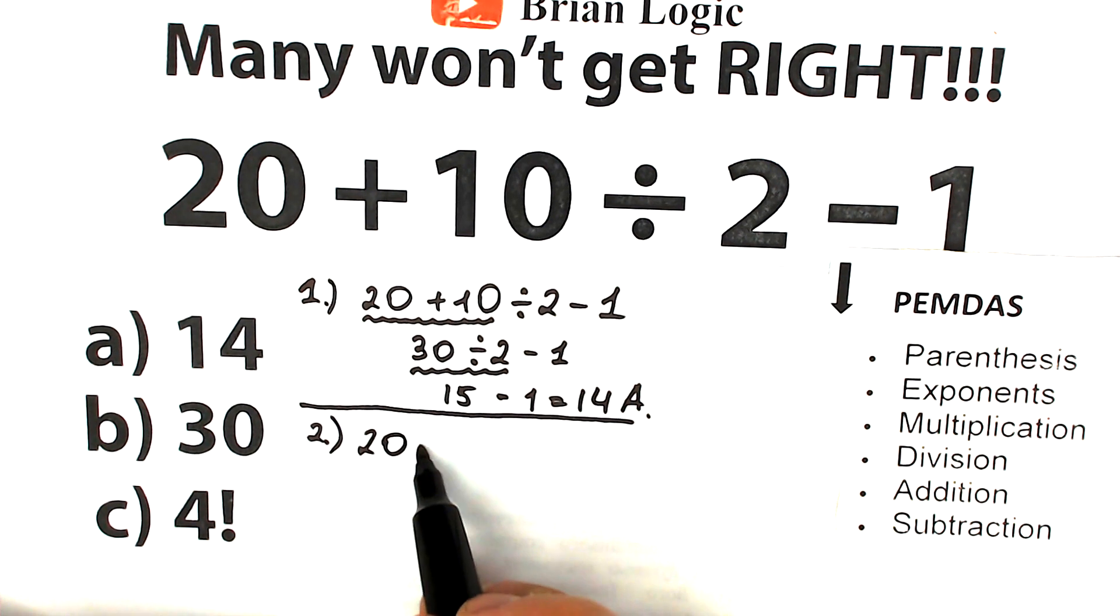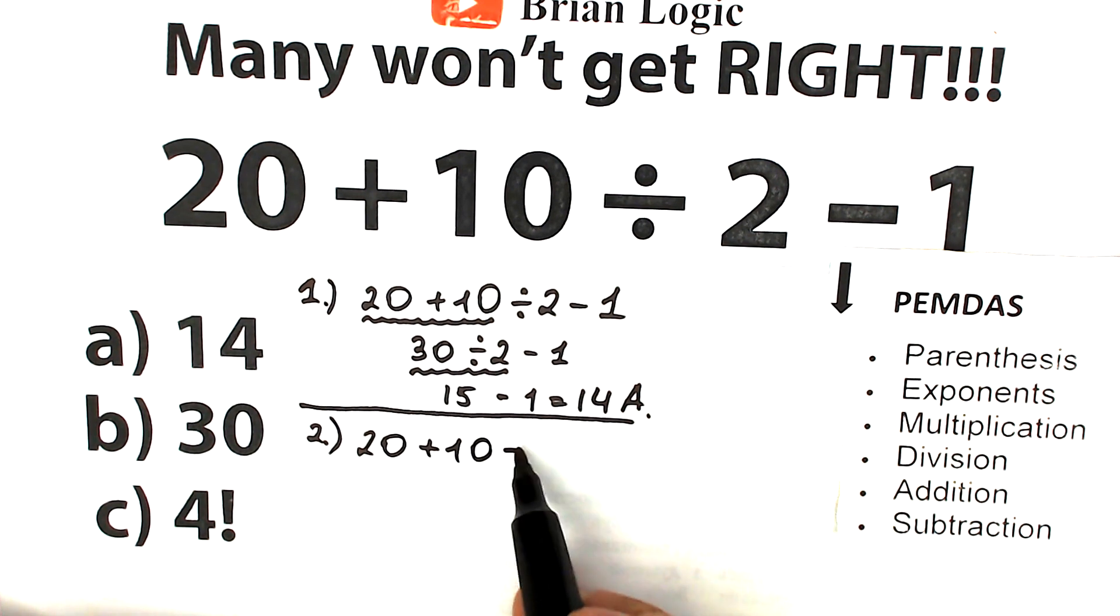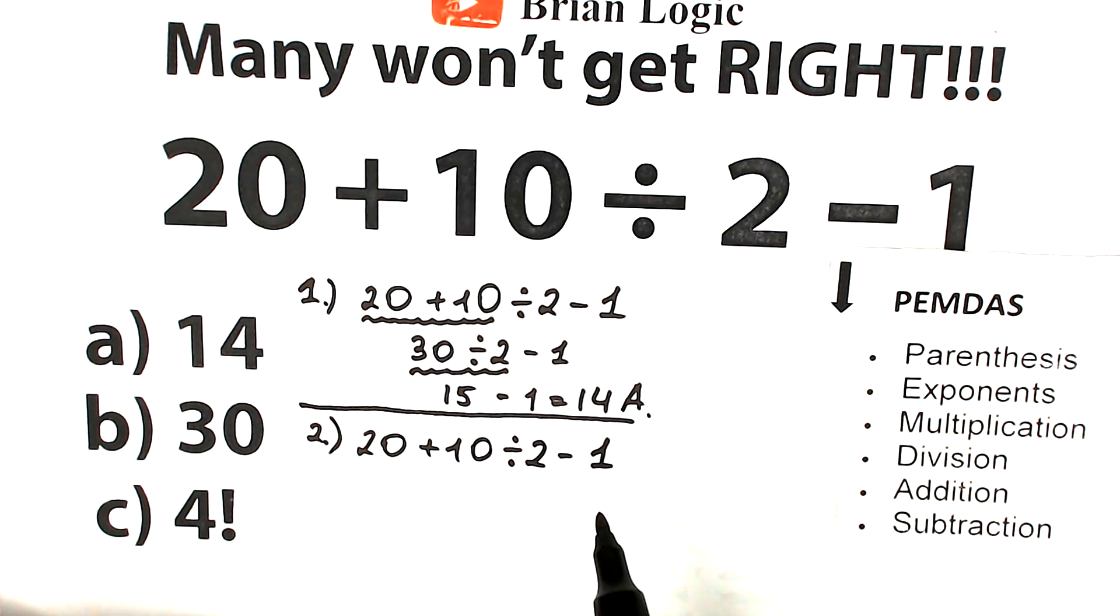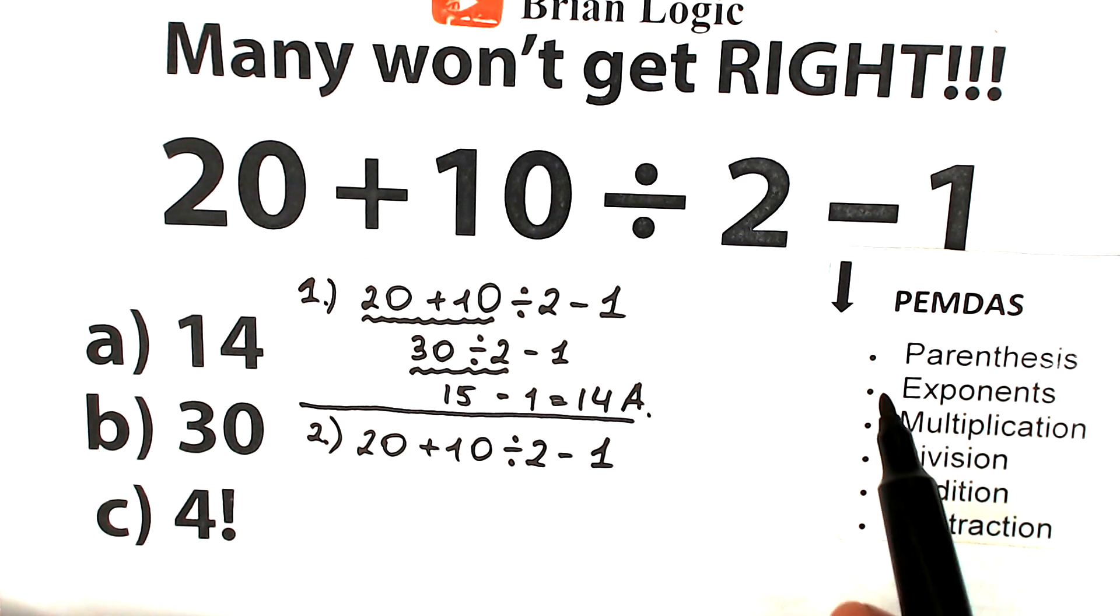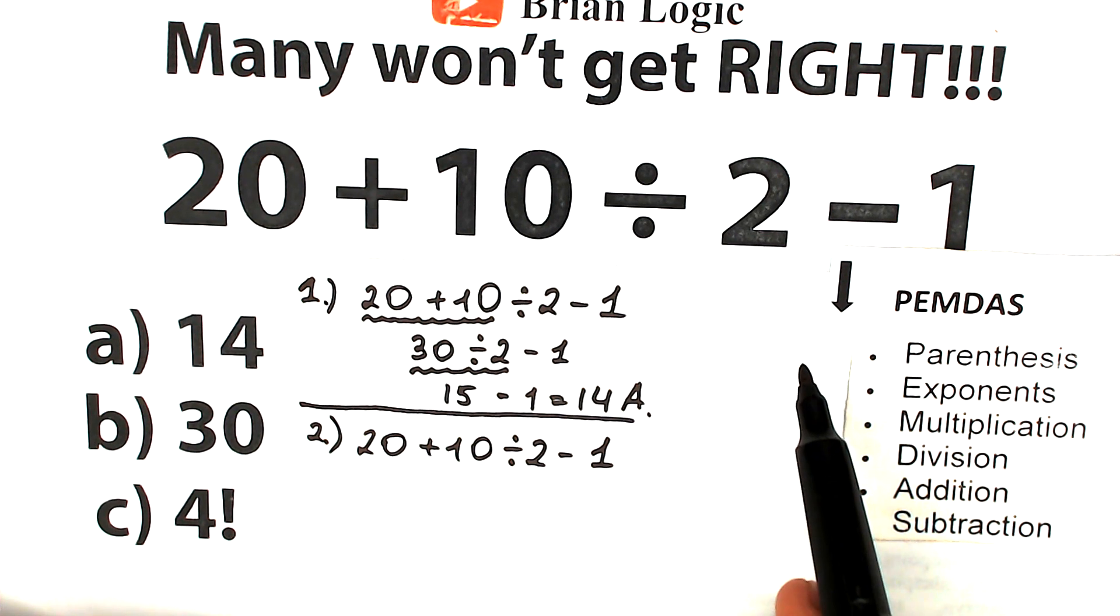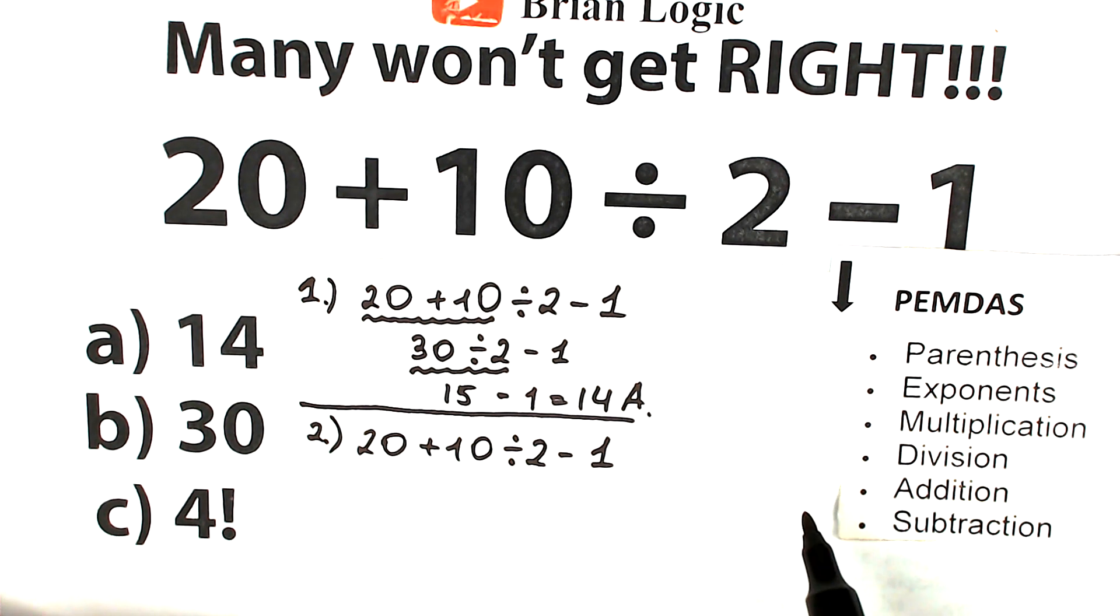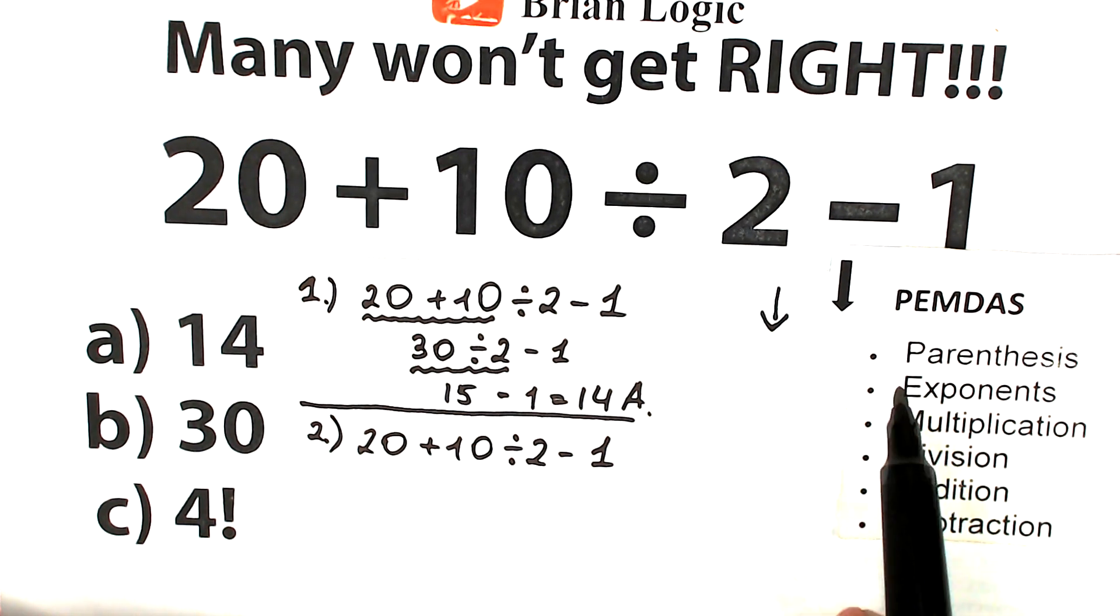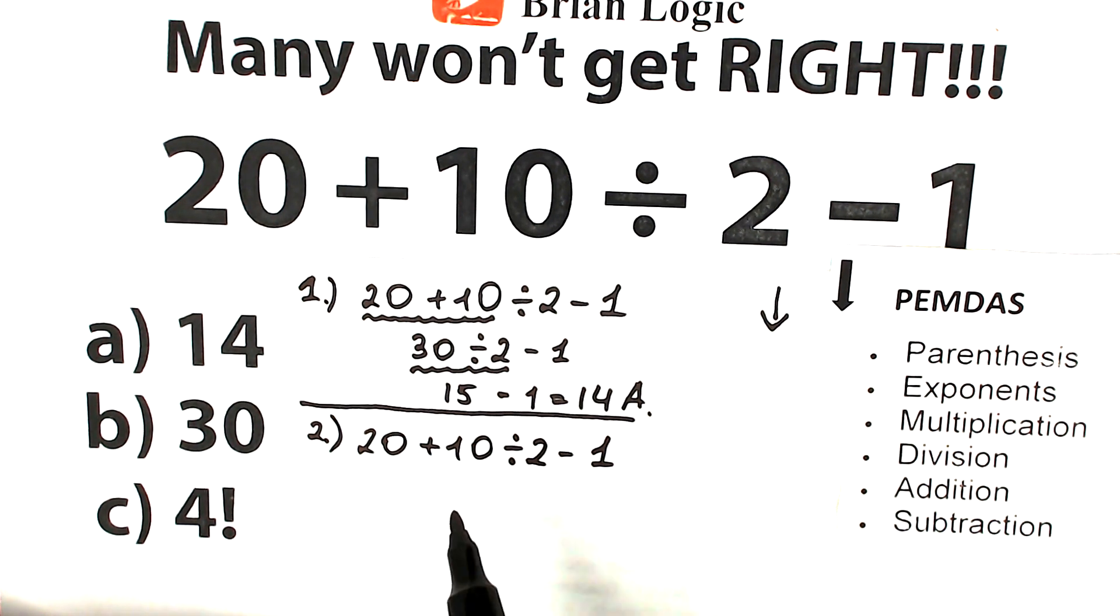We have 20 plus 10 divided by 2 and minus 1. Here's our challenge. How does PEMDAS work? PEMDAS works from the top to the bottom, so the highest priority has parentheses and the lowest priority has addition and subtraction. Highest priority on the top and the lowest on the bottom.